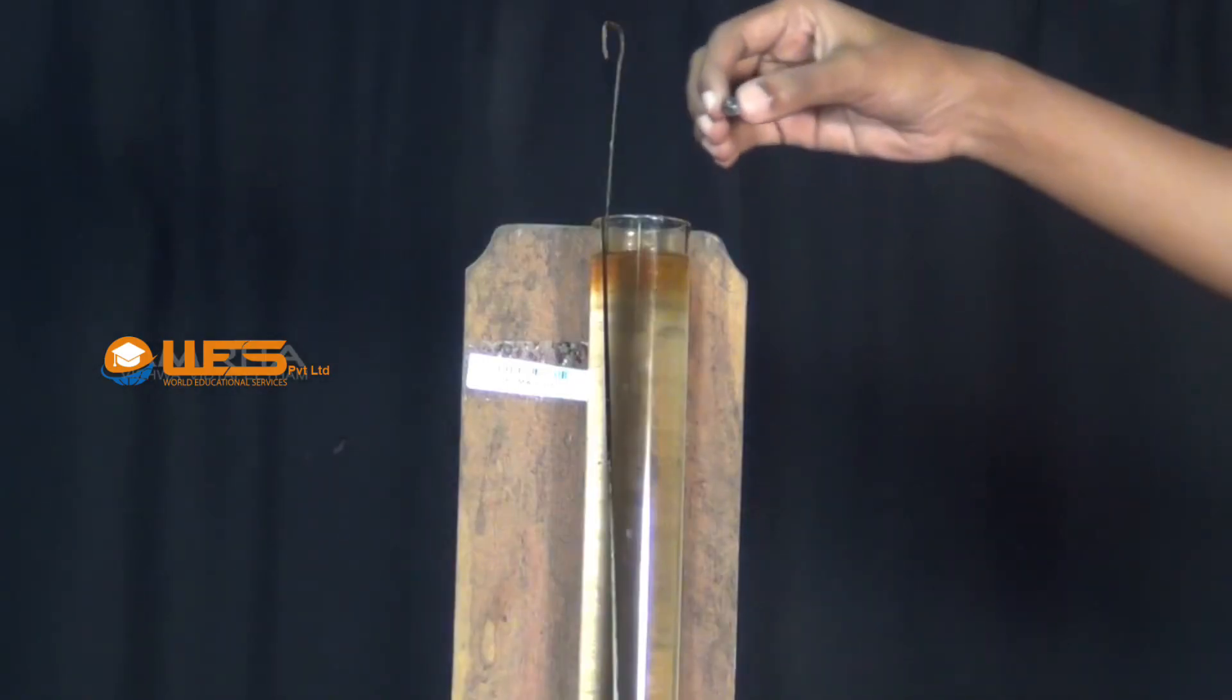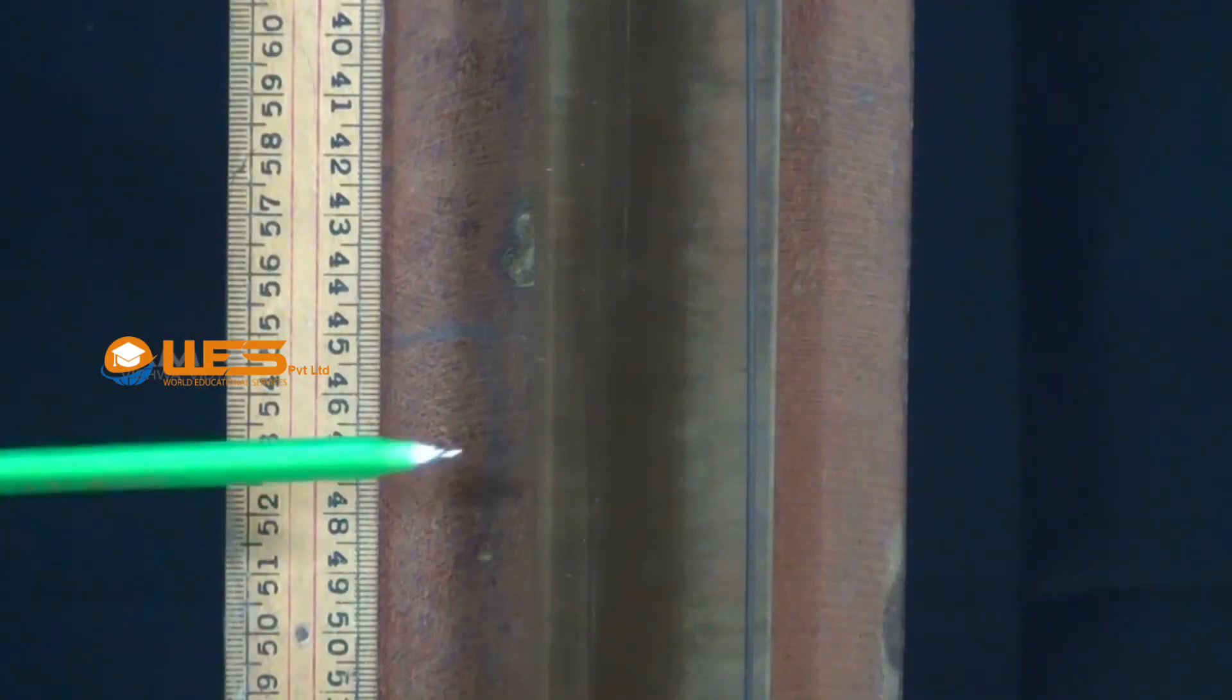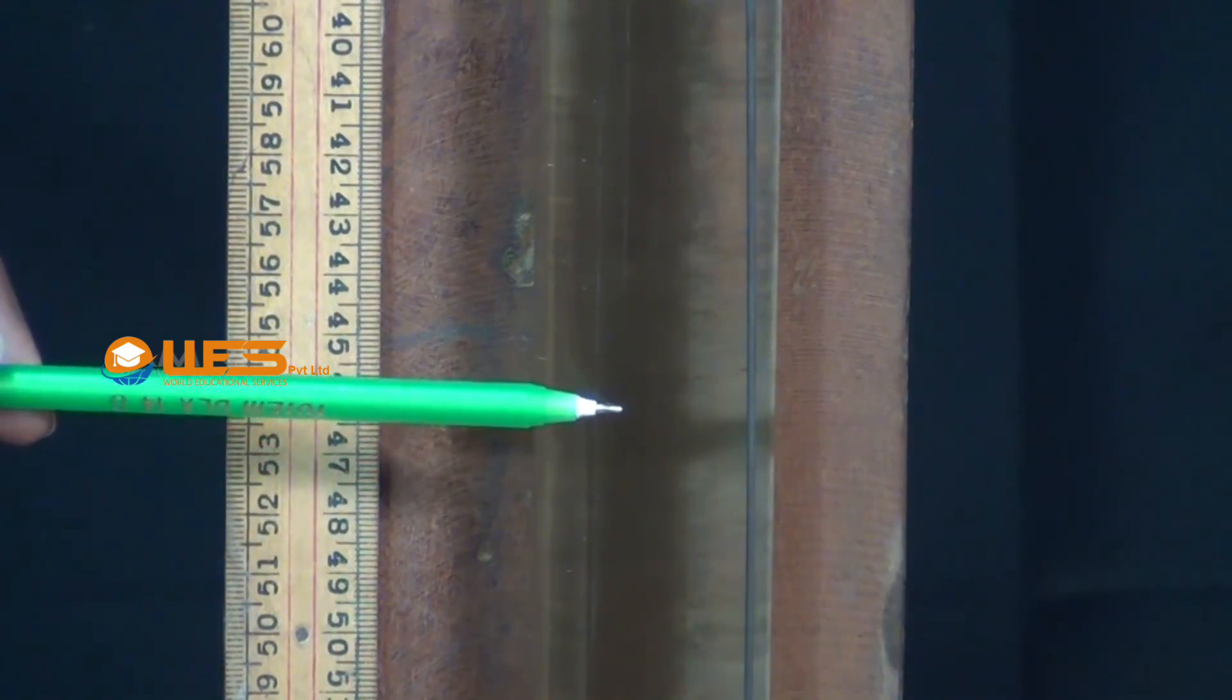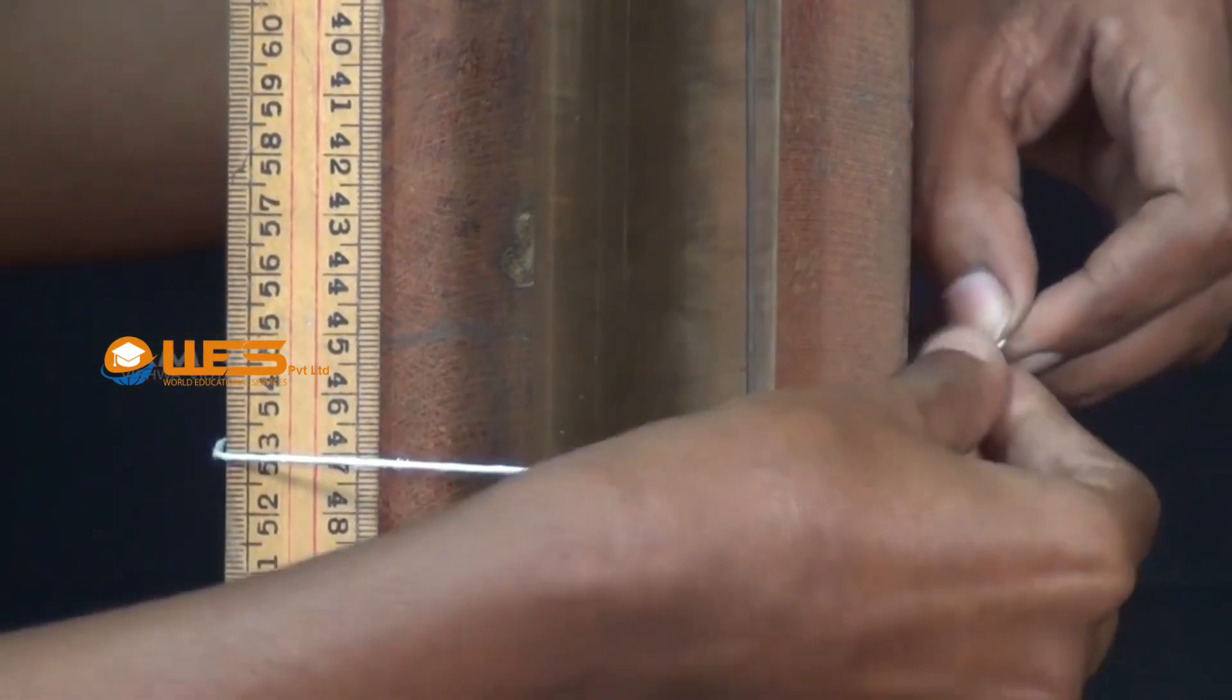Drop the second spherical ball called test ball gently into the liquid. Note the position at which it acquires terminal velocity. Mark a reference point A below this position using a thread.